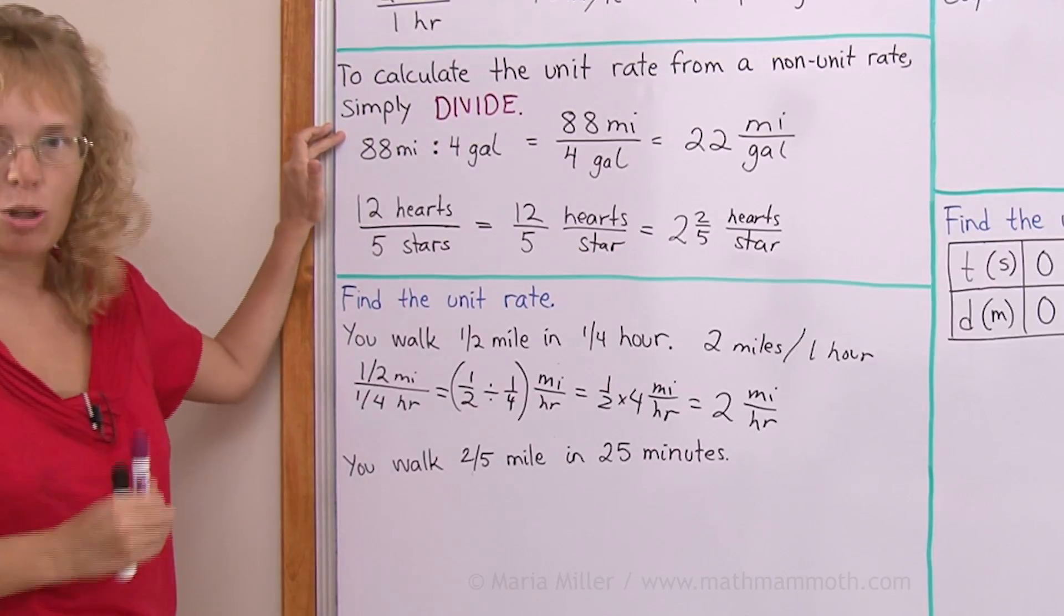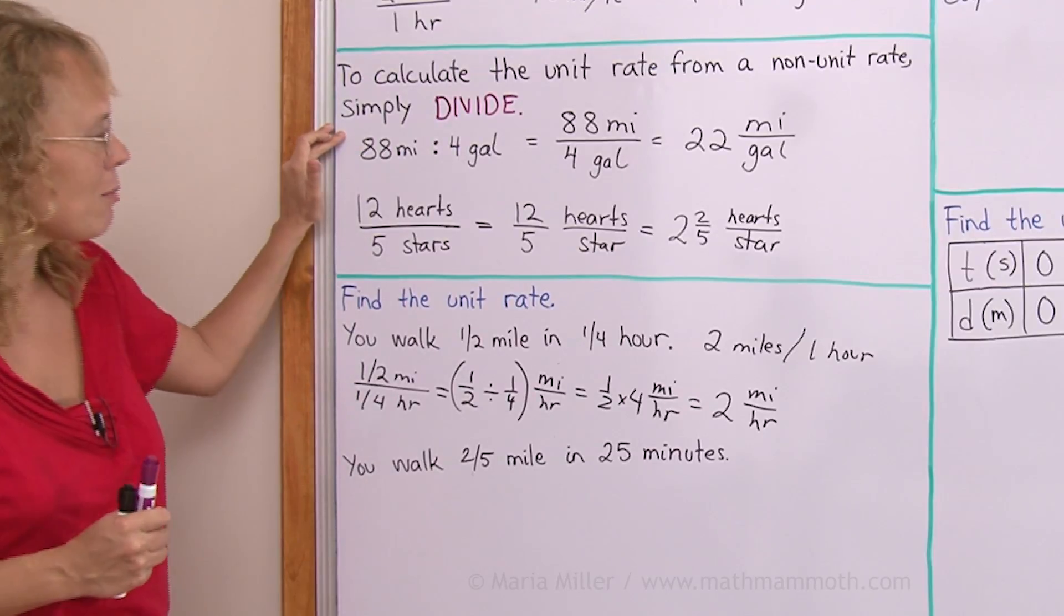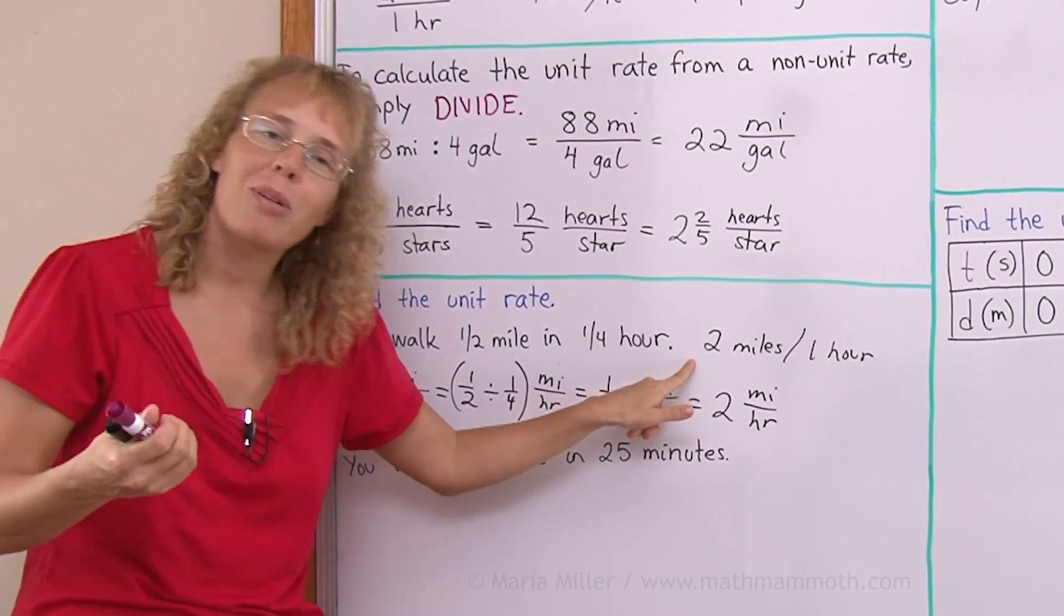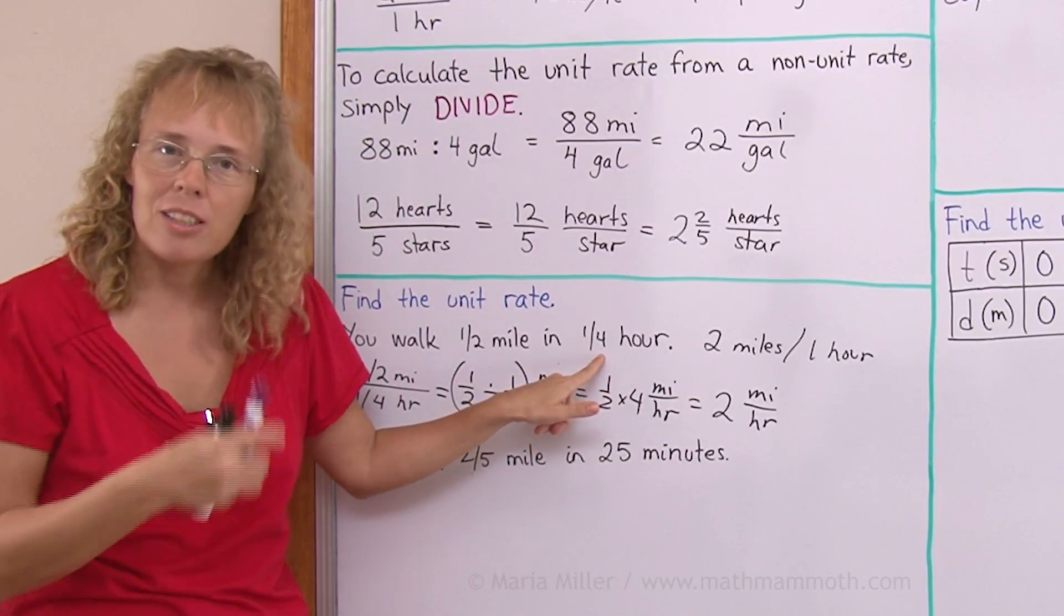So division works always for finding the unit rate. But sometimes, like in this case, we figure it out by multiplying, because it was a fractional part of an hour.